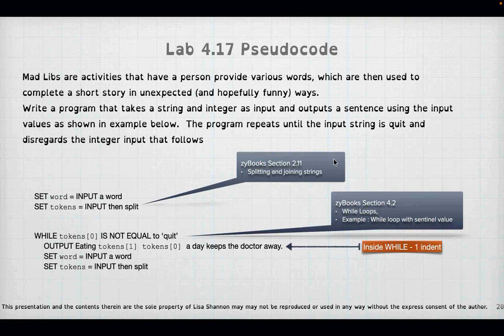Lab 4.17 is a Mad Libs. Somebody provides words and you complete a short story by replacing tokens. You'll have a word and input tokens as a list by splitting the input. While tokens is not equal to 'quit', output 'eating [token1] [token0] a day keeps the doctor away', then ask for input and tokens again. This is an example where you need a while loop — it is not a finite set, and the user has to do input inside the loop to change the outcome. You have to use while for 4.17 or it won't work.